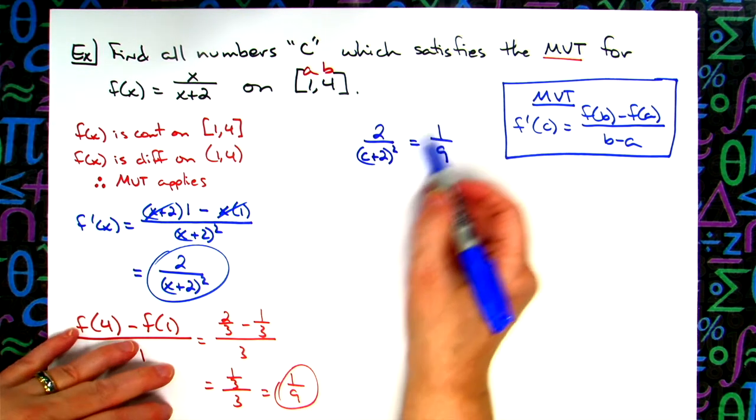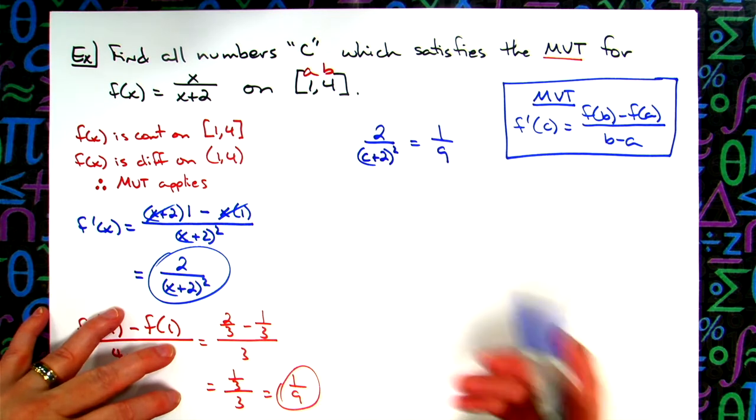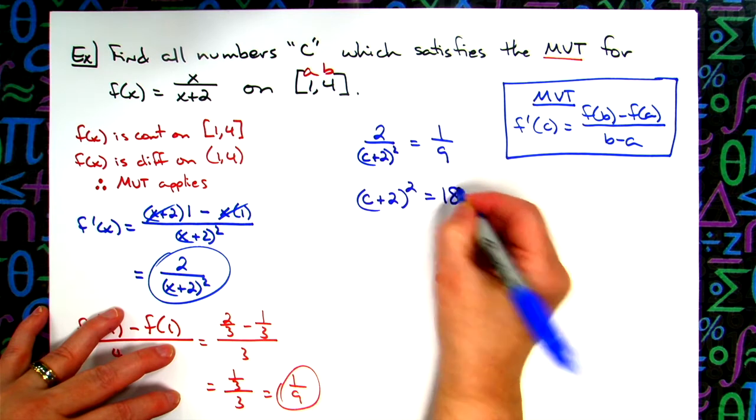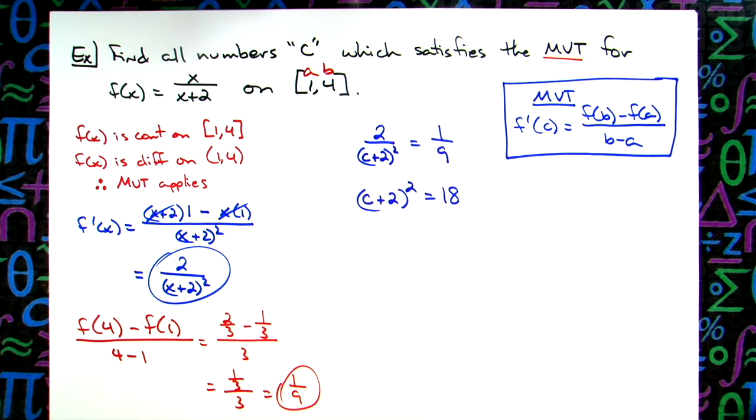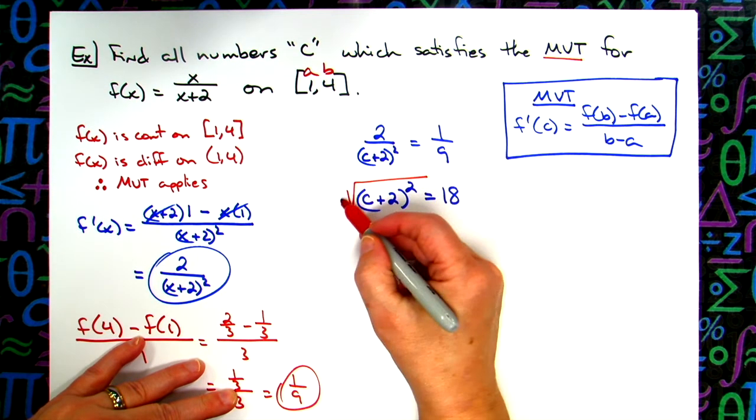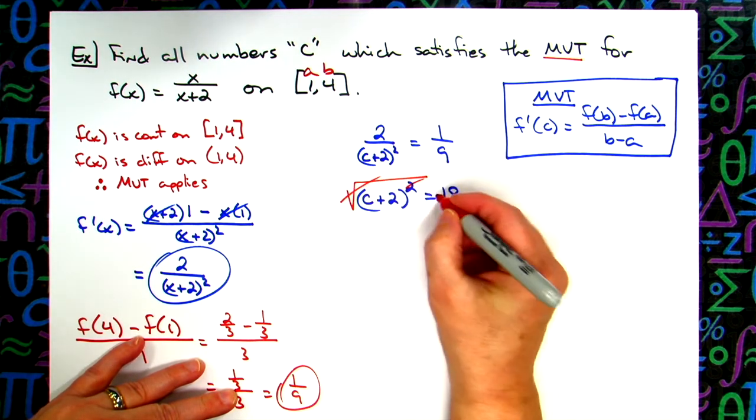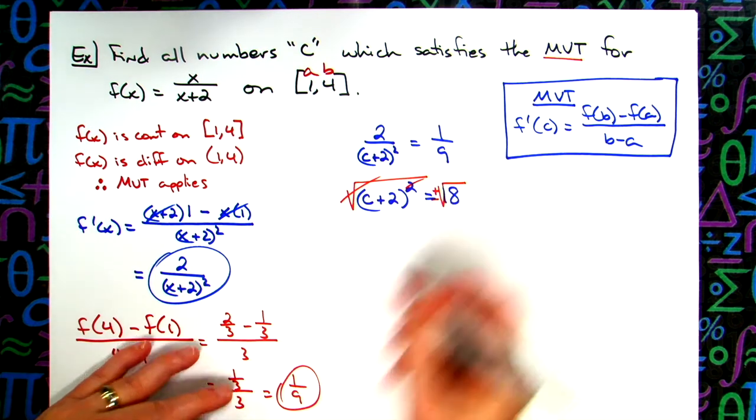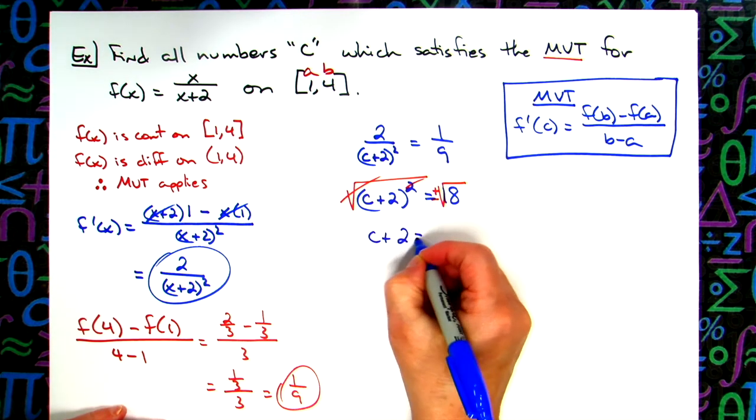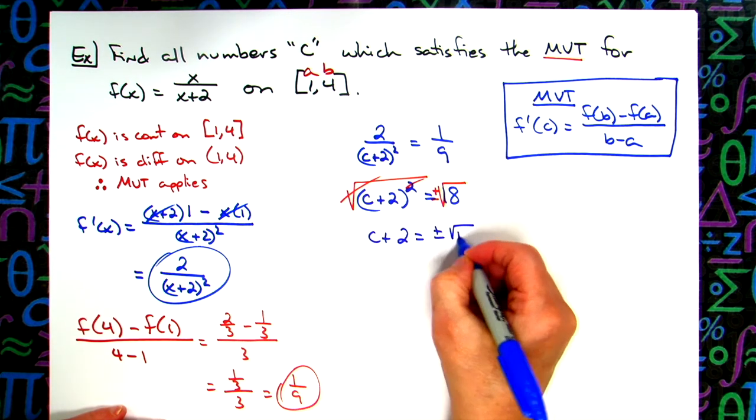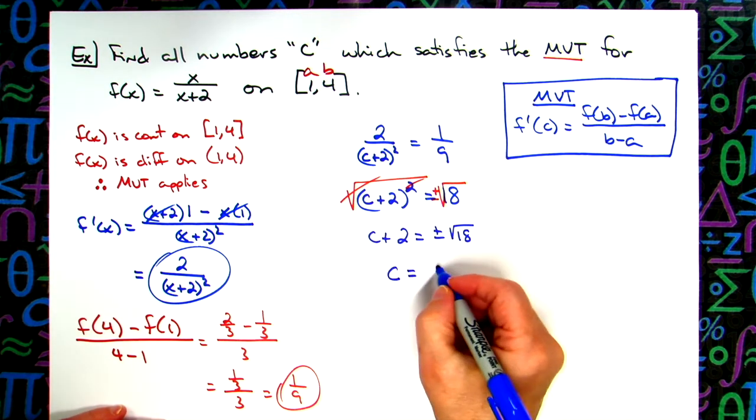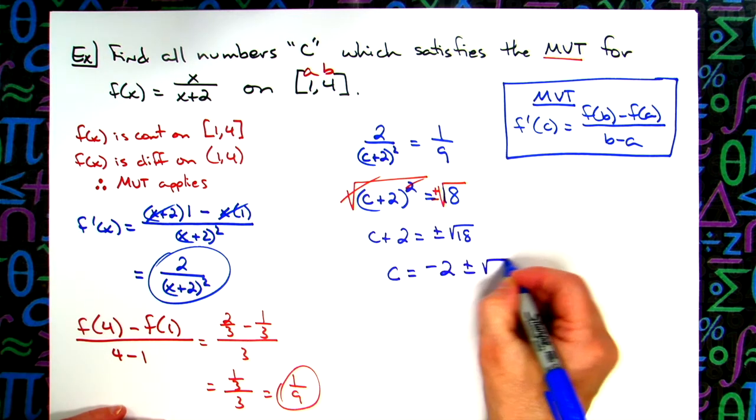Easiest way here probably to do this would be to cross multiply. It's a nice little proportion. So then I'm going to have (c+2)^2 equals 18. Let's go ahead and use the square root property. Take the square root of both sides. I've got to remember to be sure and include the plus or minus square root of 18 on that side. So then I'll be left with c+2 equals plus or minus the square root of 18. We'll subtract 2 from both sides. So c is going to be equal to -2 plus or minus the square root of 18.